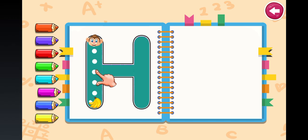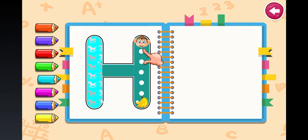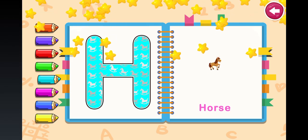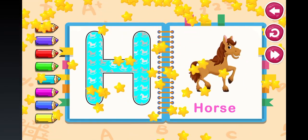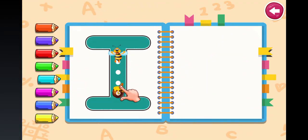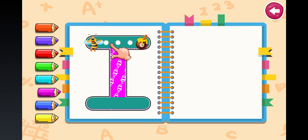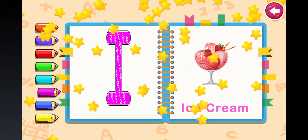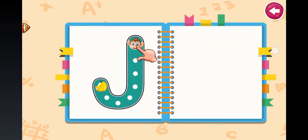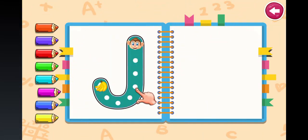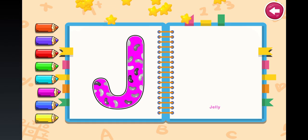H. Awesome. Superb. H for Horse. I. Awesome. I for Ice Cream. J. J for Jelly.